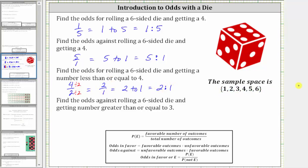For the last example, we're asked to determine the odds against rolling a six-sided die and getting a number greater than or equal to three. The numbers greater than or equal to three are the favorable outcomes, and the numbers less than three are the unfavorable outcomes. There are two unfavorable outcomes — one and two — and four favorable outcomes. Because we're looking for the odds against getting a number greater than or equal to three, we want the ratio of unfavorable to favorable outcomes, so the ratio is two to four, which simplifies to one to two.